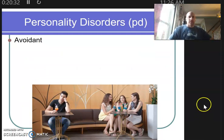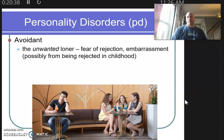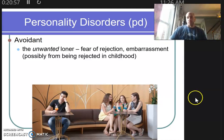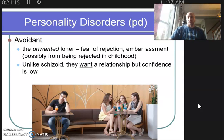Next we have the avoidant personality. Look at this one and see which one it reminds you of. The nickname for an avoidant is an unwanted loner. Unlike schizoids who are loners and okay with it, these people are alone but they don't want to be. The reason is they have tremendous fears of rejection or embarrassment, possibly from a poor or unfortunate childhood experience — being rejected by a parent, family members, or friends — that caused trauma.